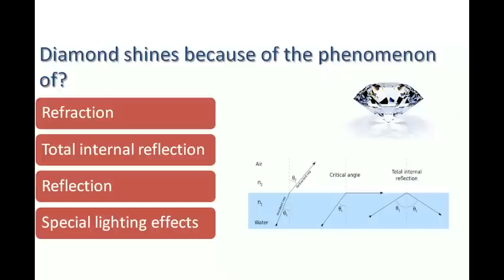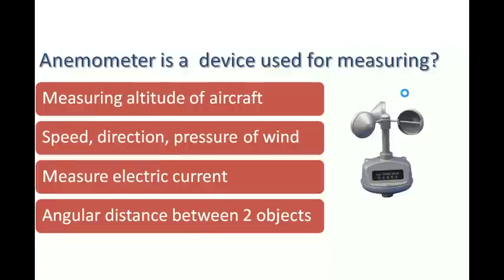Diamond shines because of the phenomenon of total internal reflection. What is critical angle? When you are going to the rarer medium and at that angle where the emergent light, the refracted ray becomes 90 degrees, that is called critical angle. After that angle, total internal reflection occurs. This is the case in diamond. The answer is total internal reflection.